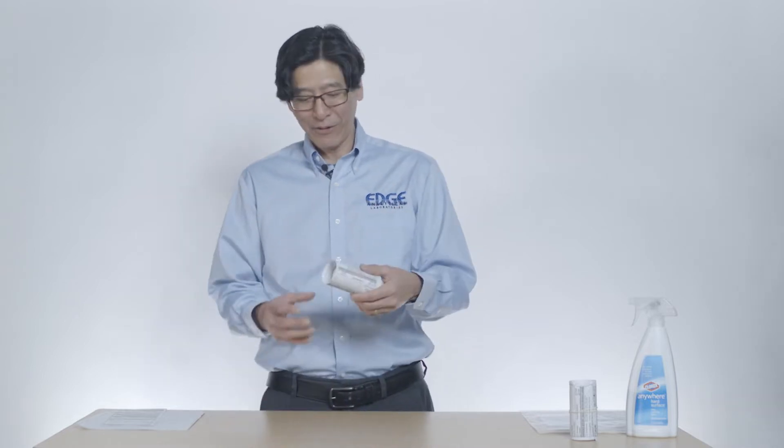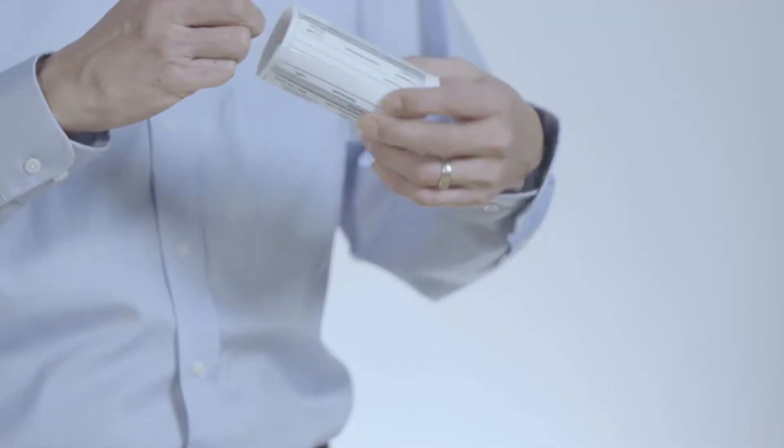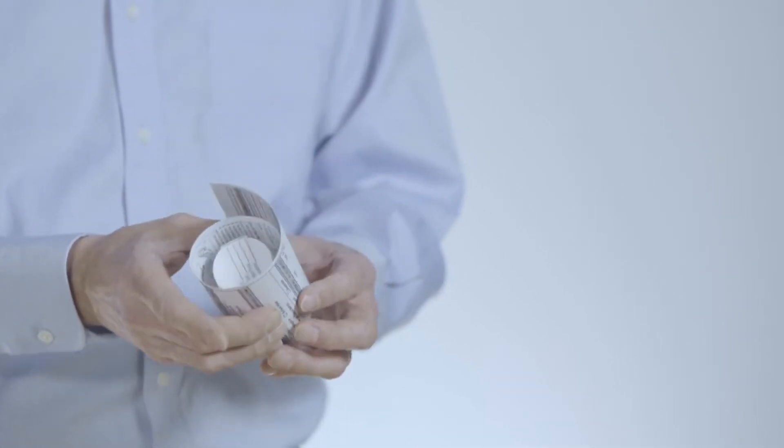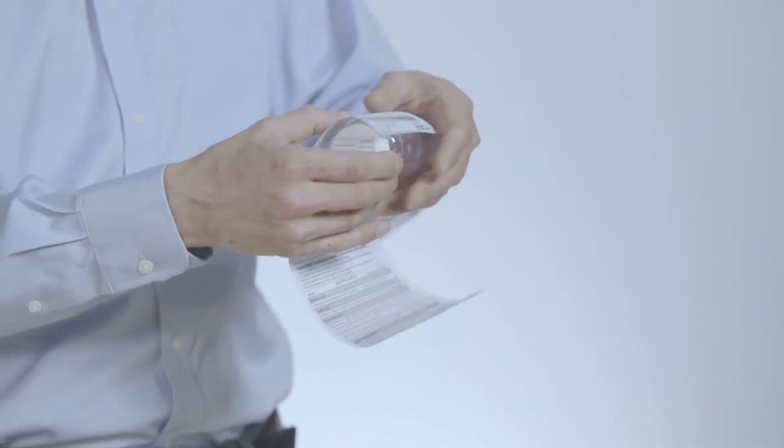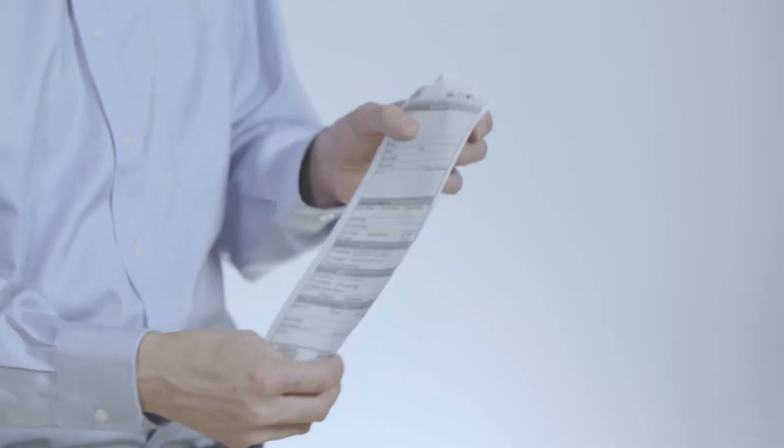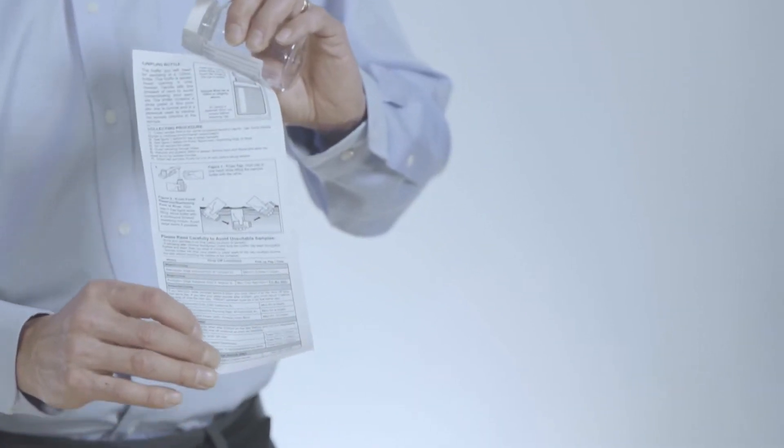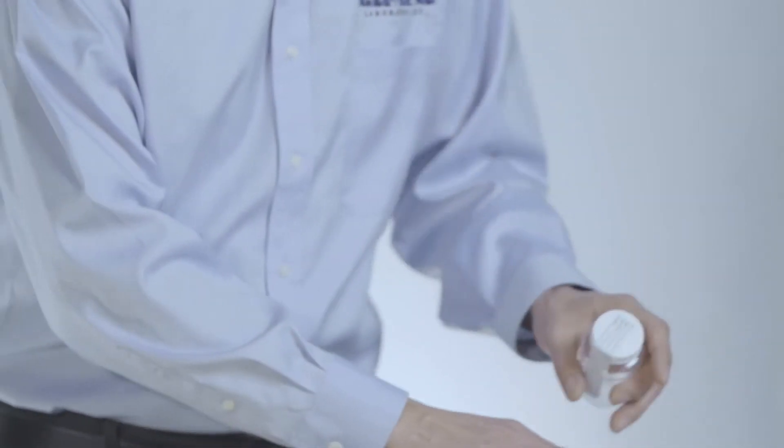When you come to our lab, you'll get this sample bottle with paper wrapped around it. The paper is for you to fill out with all the information for your water system. It also has instructions on the back, so this will help clarify if you have any further questions.